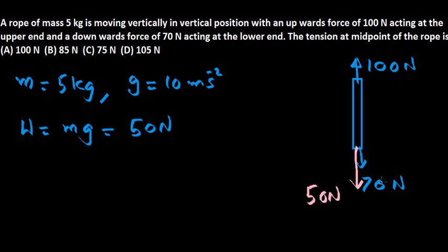Now look at the rope. There are two forces: one is weight 50, another is the downward force 70. So these two things give you a total of 120 N downward. And there is only 100 N upward. So that means the net force is downward, so this should be accelerating in the downward direction.